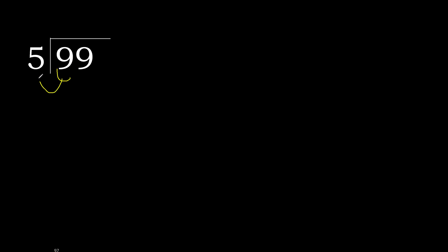99 divided by 5. 9 is not less, so we work with 9. 5 multiplied by which number is nearest to 9 but not greater? 5 multiplied by 2 is 10 — 10 is greater. 5 multiplied by 1 is 5 — 5 is not greater.